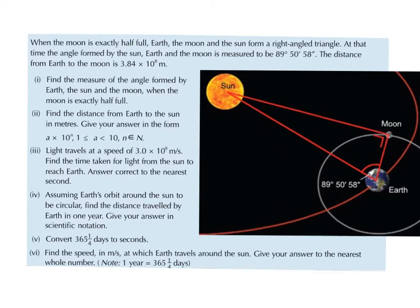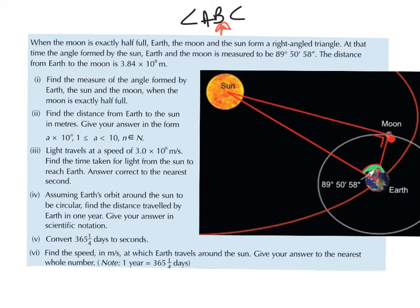The angle formed by the sun, earth, and moon — remember when we're doing angles, if I did angle ABC, it would be the angle in the middle I'd be talking about. So here they're talking about the angle at the sun, the earth, the moon, which is actually this angle here, measured to be 89 degrees 50 minutes 58 seconds.